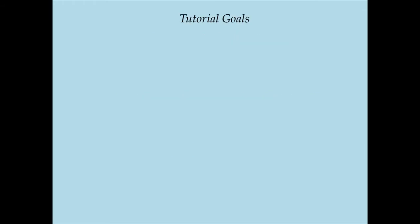I have three goals in this tutorial. The first one is to show you some fundamental analogies between signals in mechanical and electrical systems. When I say signals, I generically mean any quantity that is a variable with respect to time — velocity, force, current, voltage. These are all signals. I want to explore the analogies between the signals in a mechanical system and the signals in an electrical system.